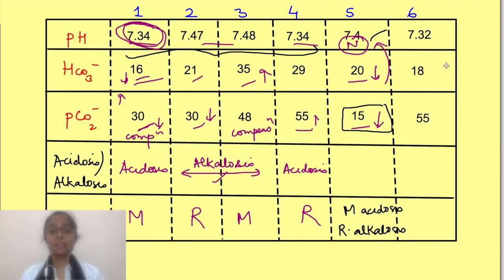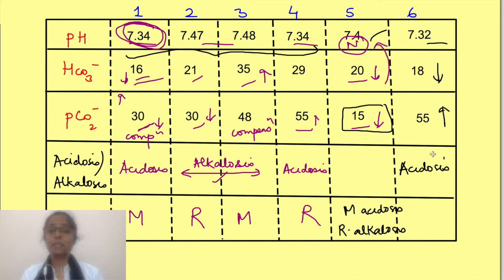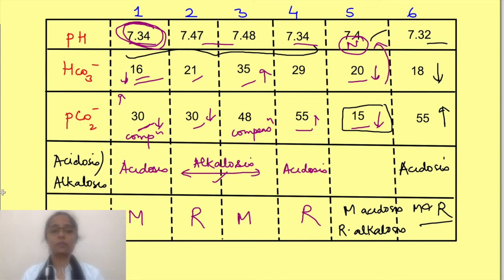In the sixth scenario, pH indicates acidosis. Looking at bicarbonate and pCO2, they are going in different directions: bicarbonate is less and pCO2 is more, so both are causing acidosis. This is a case of mixed acid-base disturbance caused by both metabolic and respiratory acidosis simultaneously.